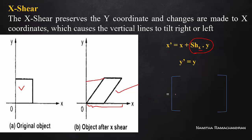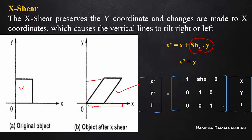This is the corresponding homogeneous coordinate system representation. So x' = x + y · Shx, and y' = 0 + y + 0, that is y. This is the matrix with x row, y row, and 1; and x column, y column, and 1.